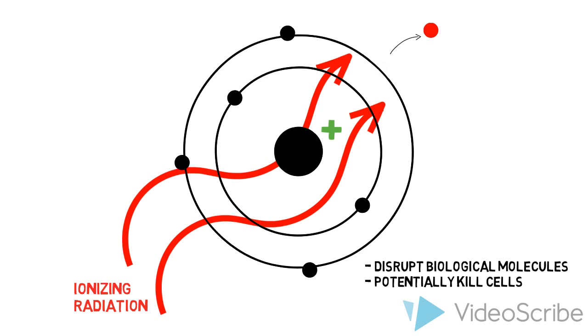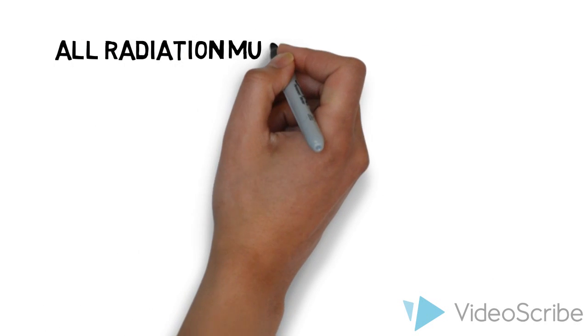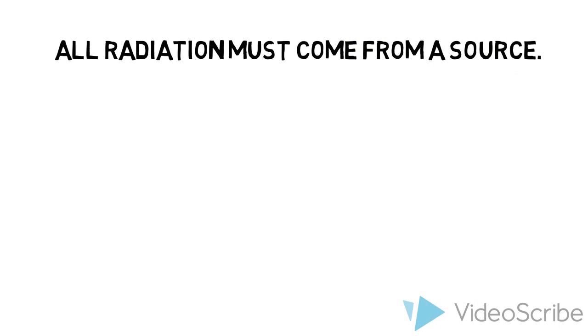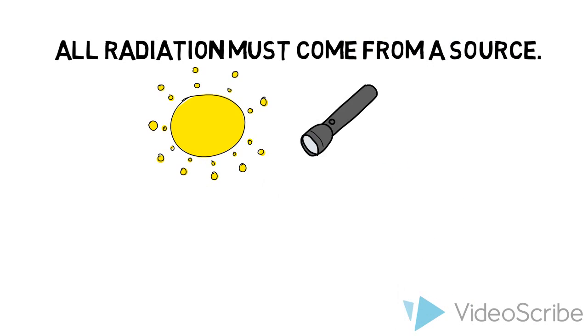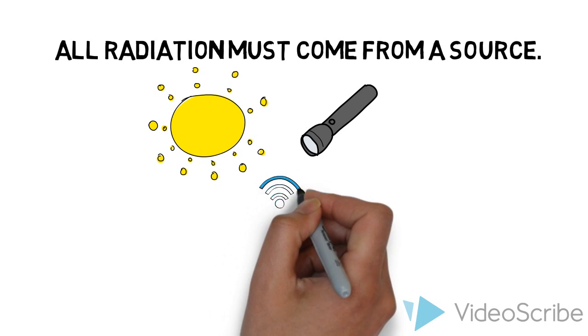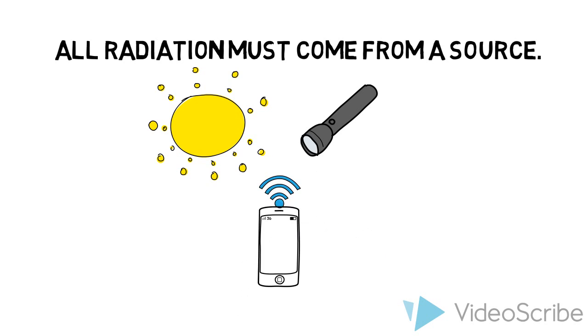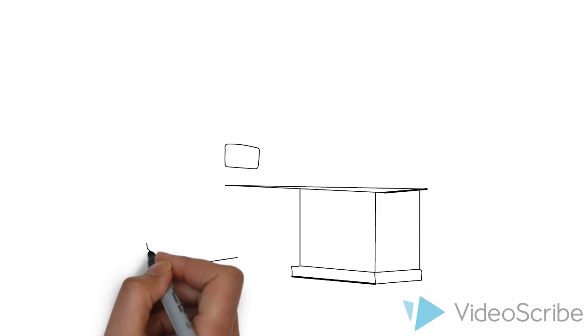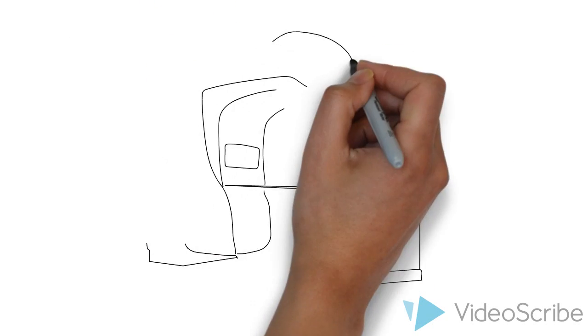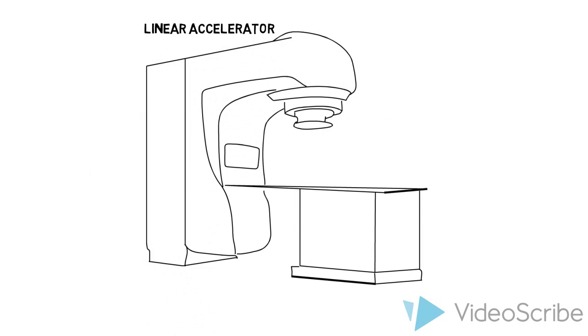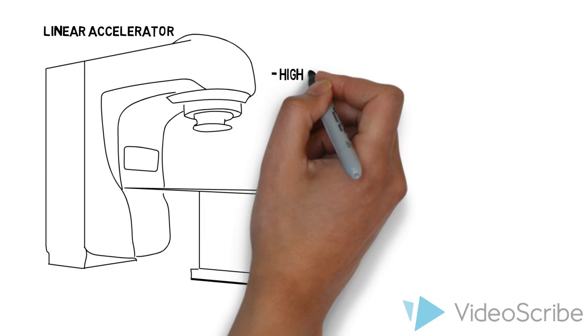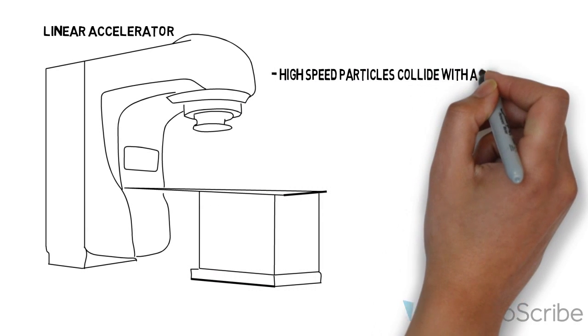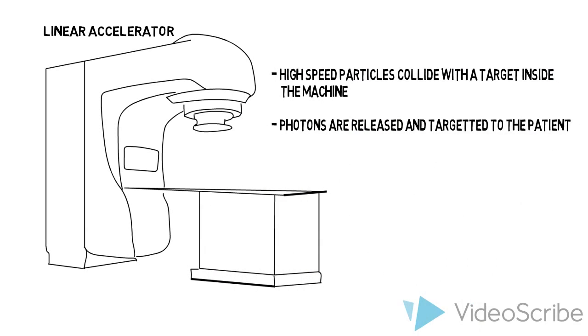You may be wondering how on earth do we produce this radiation? Broadly speaking, all radiation must come from a source — visible light comes from the Sun or your flashlight, and radio waves may come from your smartphone. But where do cancer-killing x-rays come from? X-rays for cancer treatment are commonly generated by a linear accelerator. In this machine, high-speed particles, often electrons, collide with a metal target and photons are released. This photon beam can then be directed towards a patient and their tumor.